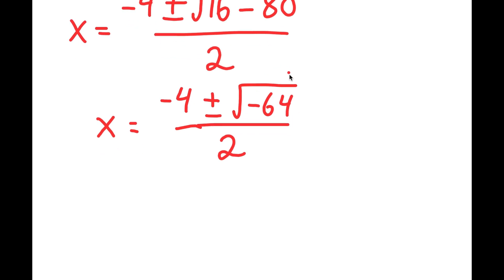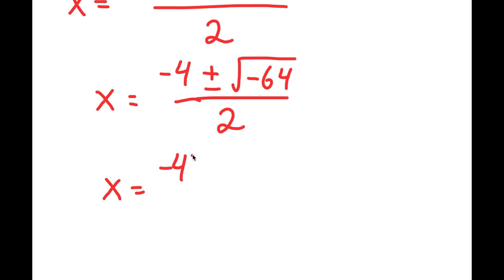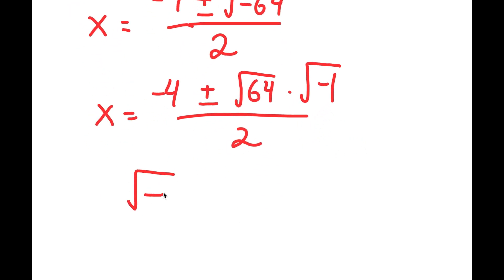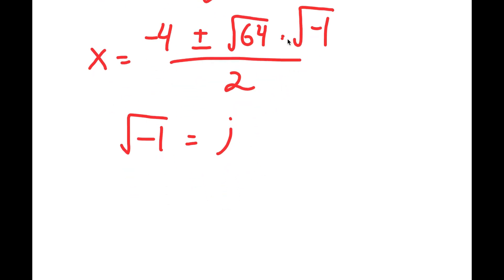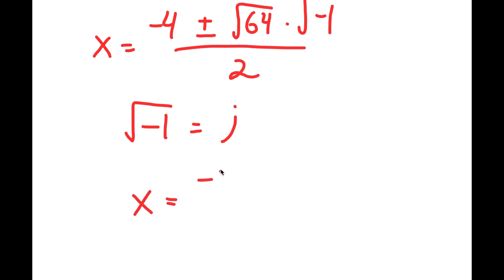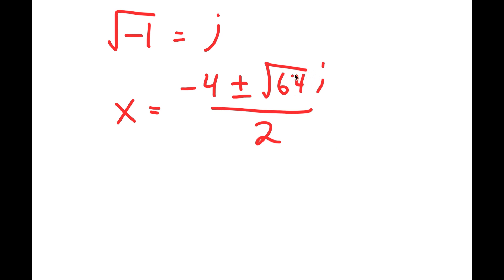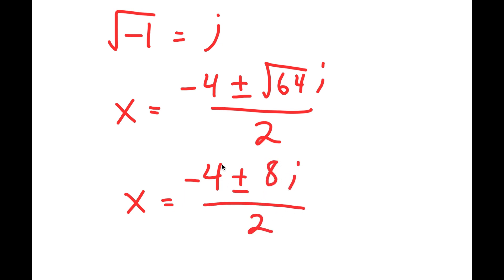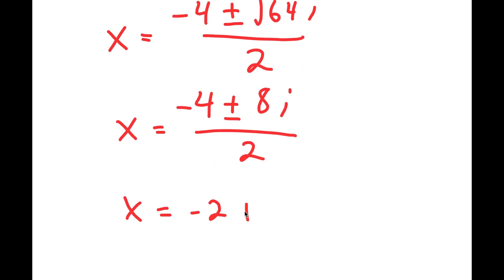From here, notice how we have the square root of a negative number. Most people would think this is not possible, but we can rewrite this as negative 4 plus or minus the square root of 64 times the square root of negative 1. The square root of negative 1 is the imaginary number i. So replacing it with i, x equals negative 4 plus or minus 8i over 2, giving us negative 2 plus or minus 4i.